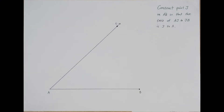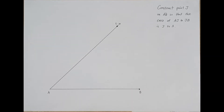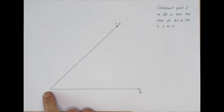Hello everyone. In this video, we're going to look at a construction that takes place in geometry. Up in the top right hand corner, we can see our instructions: we're going to construct point J on line segment AB so that the ratio of AJ to JB is three to one. We call this constructing a point along a directed line segment. We've looked at how to do this in a previous video, talking about how to partition a directed line segment, and I'll link that video in the top right hand corner.